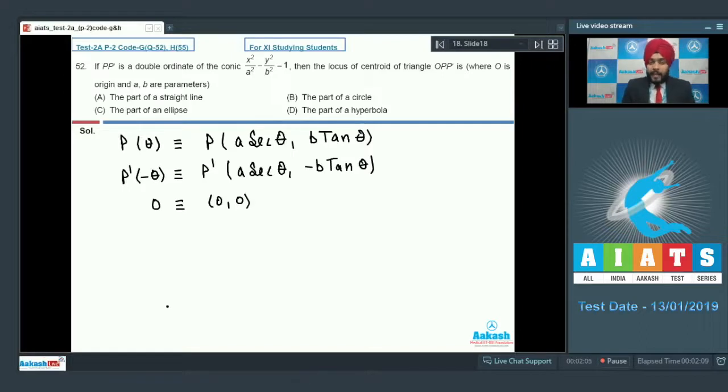Now for triangle OPP', I need the centroid. Let the centroid be G. Centroid will be given as 2A sec theta by 3, addition of all the coordinates divided by 3, comma 0. So if it is H comma K, obviously the locus is K equal to 0, that means y equal to 0 or that means x axis.